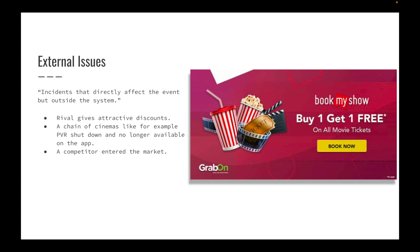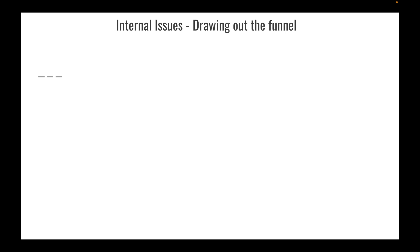External issues are incidents that directly affect the event but originate outside the Paytm system. A rival could be giving attractive discounts, or a cinema chain like PVR could have shut down or pulled out of the Paytm platform. If PVR was driving the majority of traffic and they're no longer available, that alone could cause a 70% drop. A new competitor entering the market, like BookMyShow or Paytm Insider alternatives, could also cause a sudden drop.